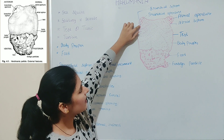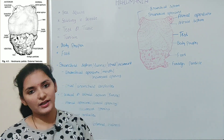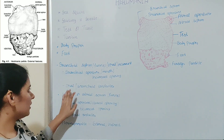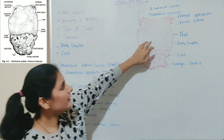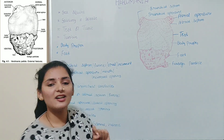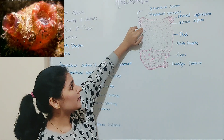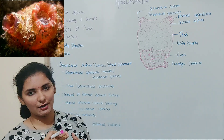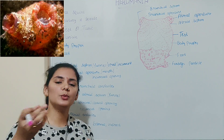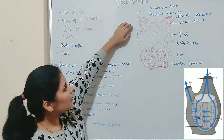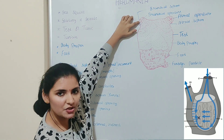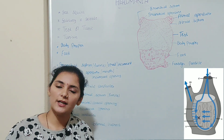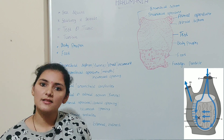At the banks of both the branchial siphon and atrial siphon, rings of tentacles are present. Tentacles around the mouth are called oral tentacles or branchial tentacles, and those at the atrial aperture are called atrial tentacles. The oral tentacles are slightly larger and form a sieving apparatus around the mouth, preventing entry of larger food particles. Water current enters the body through the branchial aperture and leaves through the atrial aperture, carrying undigested food particles, sex cells, excretory waste, and carbon dioxide.